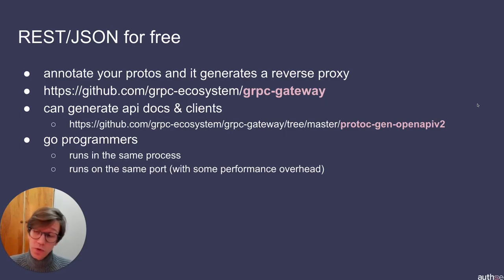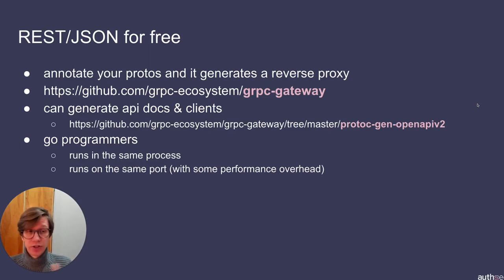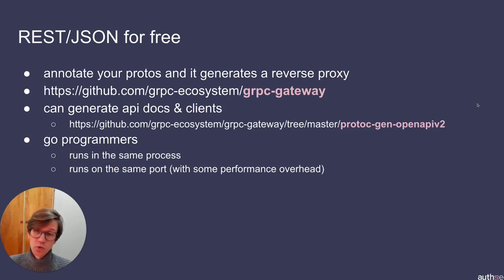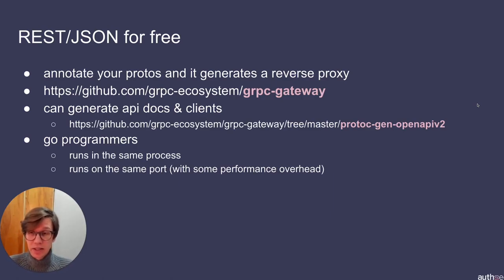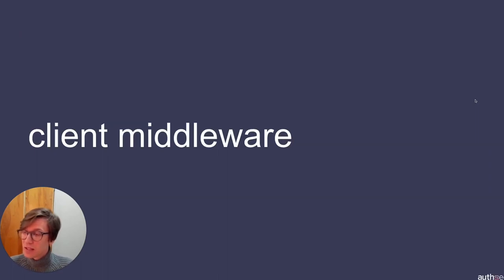For Go programmers specifically: because gRPC Gateway is written in Go, you can run the reverse proxy in the same process as your app, calling directly into your app in memory rather than as a separate process. Even cooler, you can make them share the same port — if you're willing to sacrifice some performance — by reading the first couple of bytes of a connection to determine whether the request is gRPC or HTTP and routing accordingly. So you can expose one single port from your Go service and serve both HTTP and gRPC.